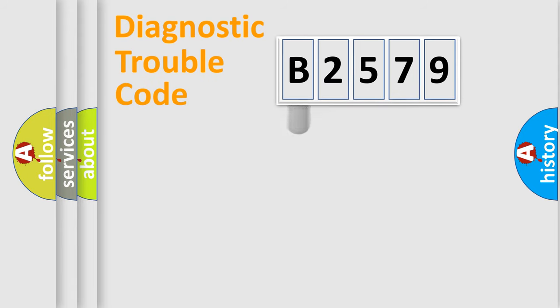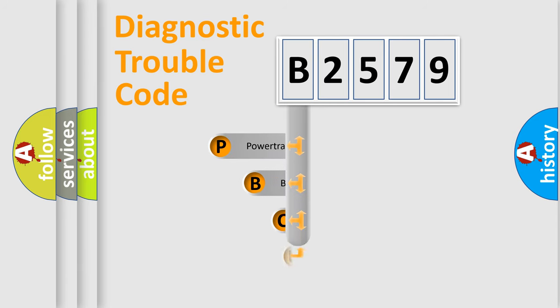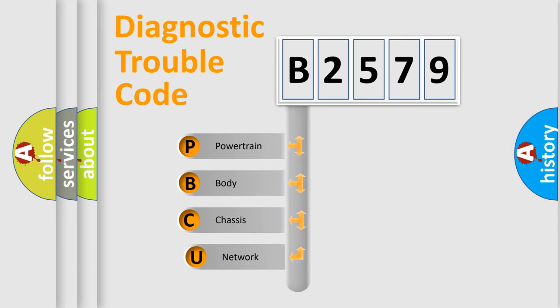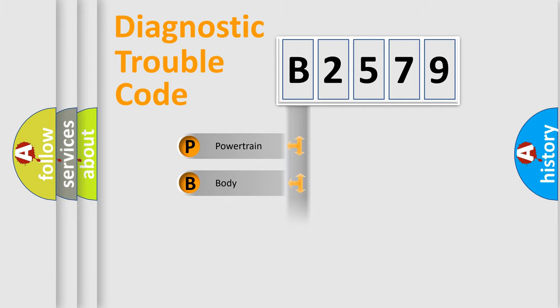Let's do this. First, let's look at the history of diagnostic fault code composition according to the OBD2 protocol, which is unified for all automakers since 2000. We divide the electric system of automobile into four basic units.